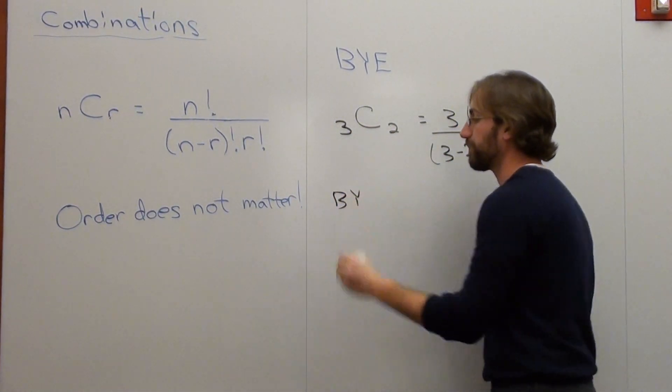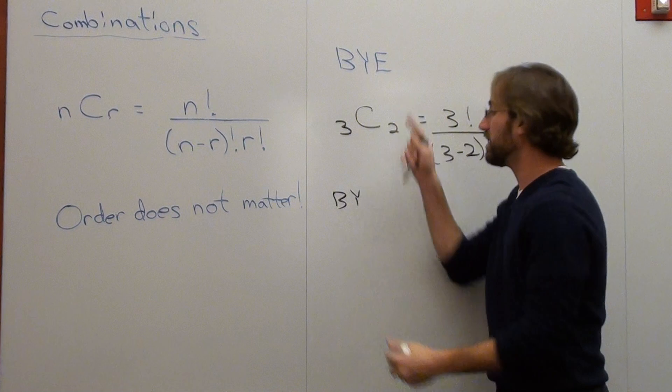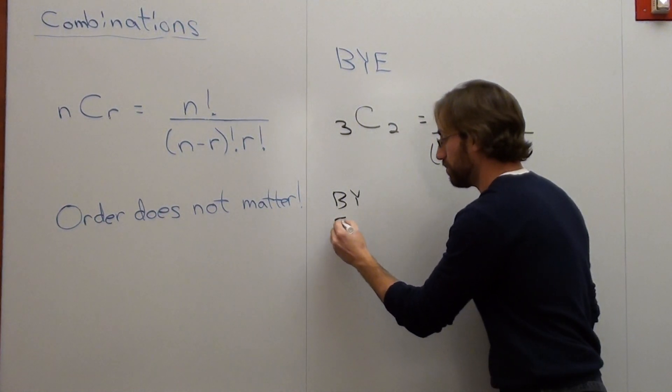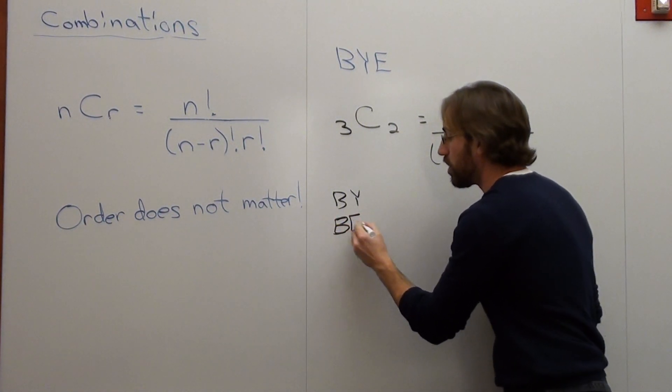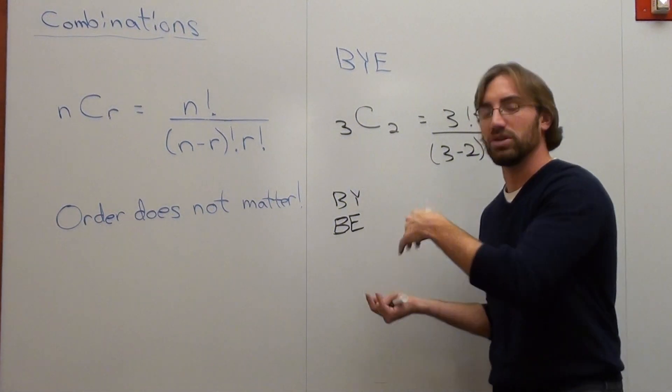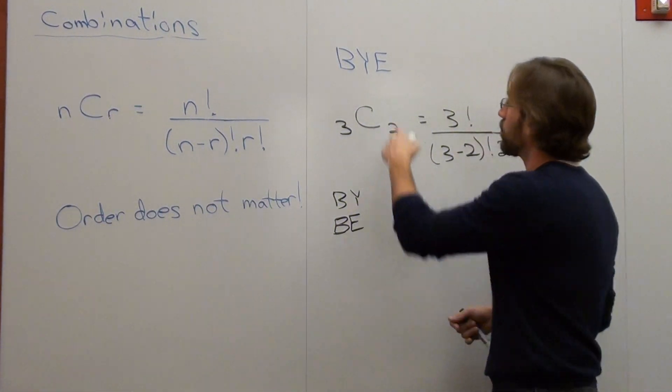There's B and Y, that's one combination. B and E. You can put E and B too, but if you put EB, you don't have to put BE. And there's Y, E.